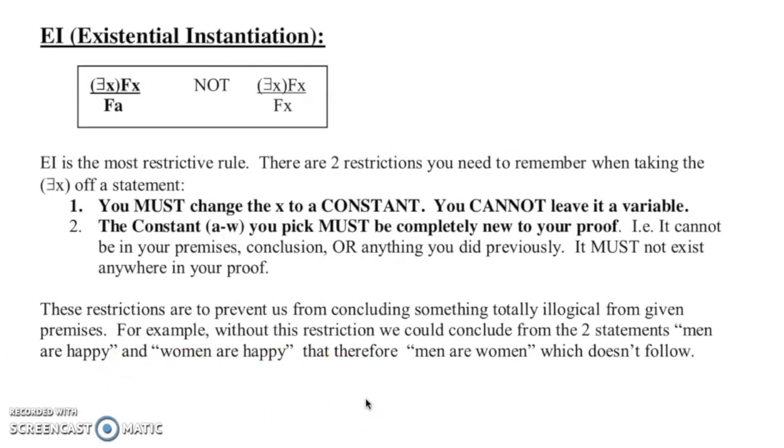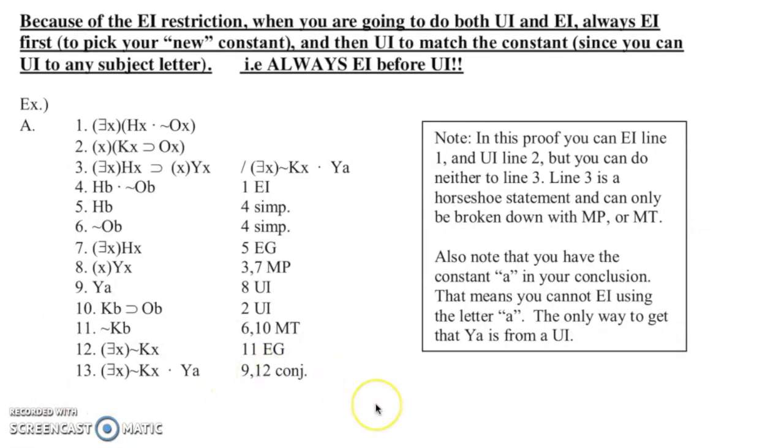So just written out, the rules here: you must change the X to a constant, and you cannot leave it as a variable. And the constant a through w picked must be completely new to your proof. Okay, so even if one of the premises has a constant in it, you cannot choose that one. It must not exist anywhere in the proof at all.